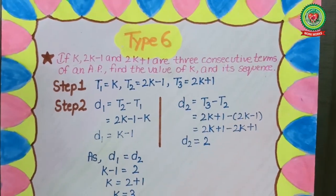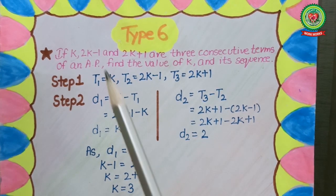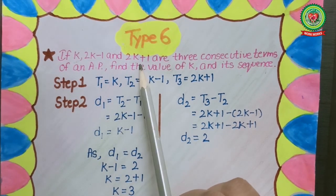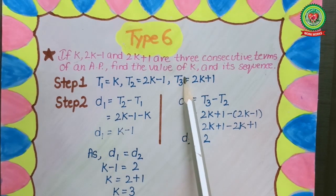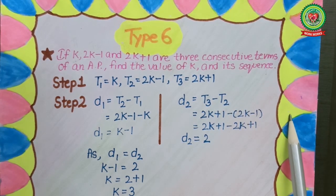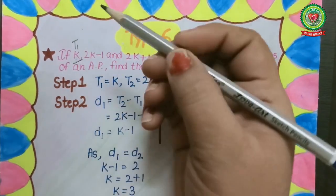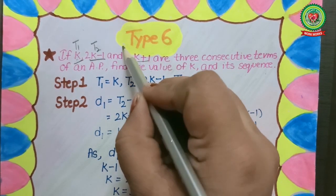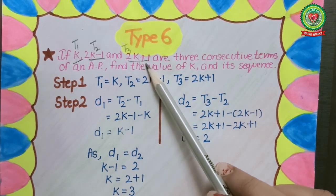We have one example related to finding x or n when three terms are given. The statement is: if k, 2k minus 1, and 2k plus 1 are three consecutive terms of an AP, find the value of k and its sequence. In this statement, what is given to us are the three terms: k is the first term t1, 2k minus 1 is the second term t2, and 2k plus 1 is the third term t3. The sequence has an unknown variable.